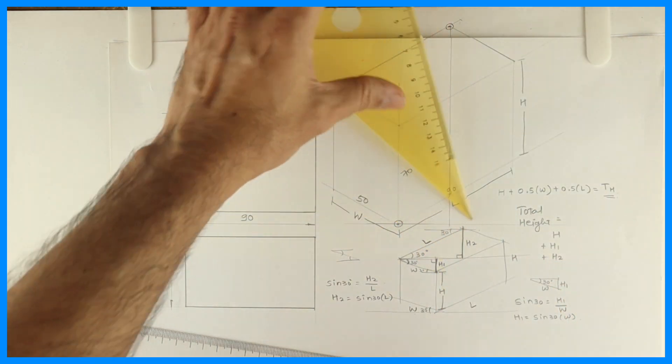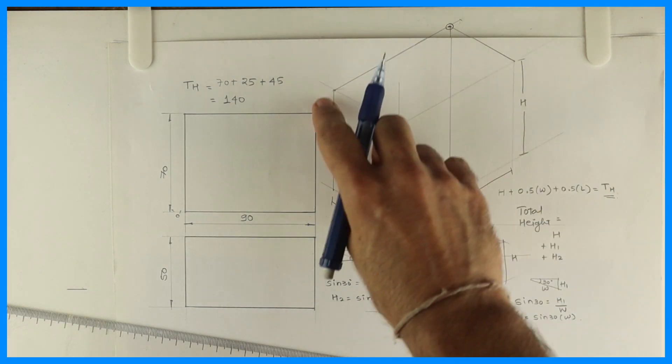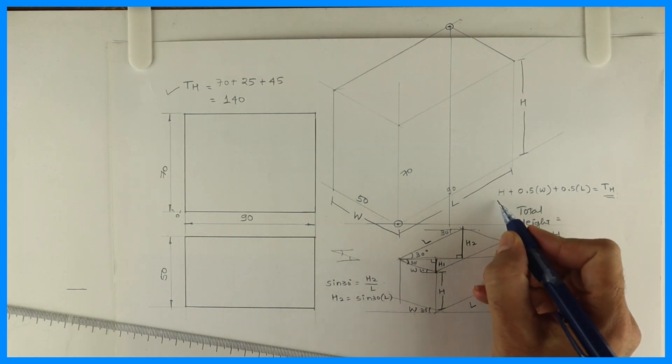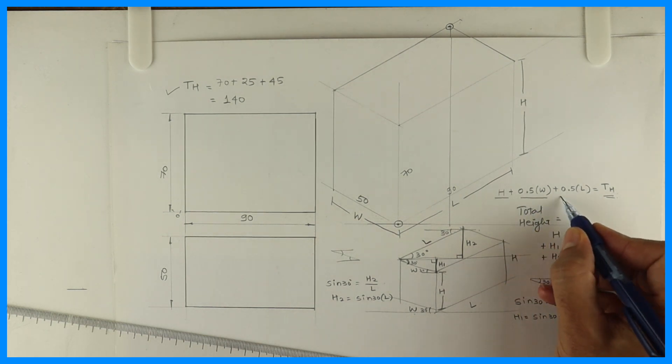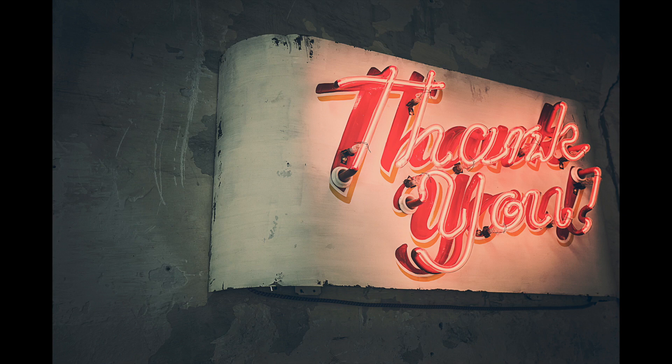So always do this calculation before you start your isometric block. So then you won't have this issue. Always remember height plus length and width half. Thank you.